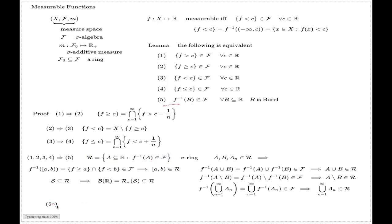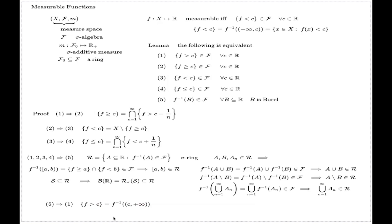The last step is implication 5 to 1. This is the easiest of all: the set {x : f(x) > C} is simply the pre-image of the particular Borel set (C, +∞). Since this is a Borel set, by statement 5 its pre-image is measurable. This completes the circular chain of implications and the proof of the lemma.